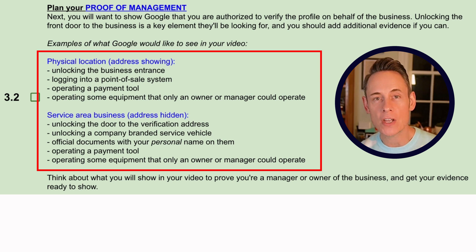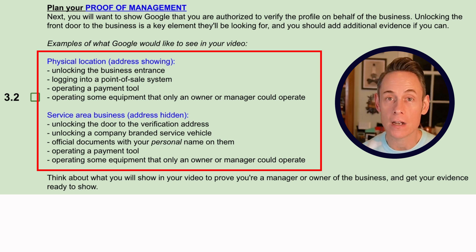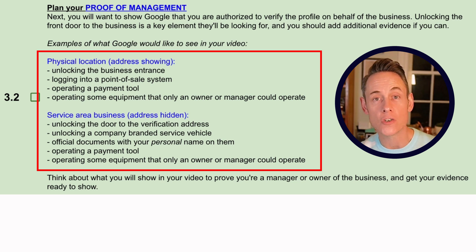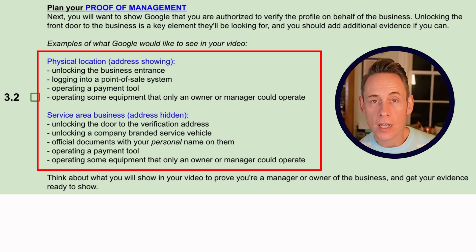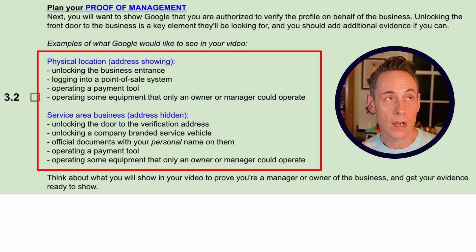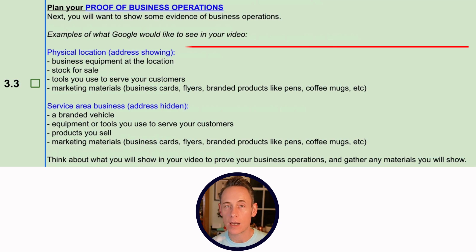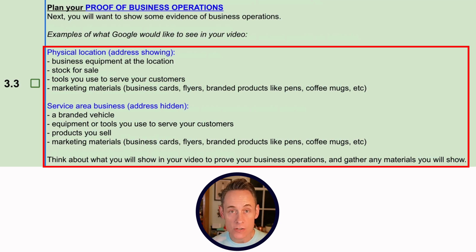Next, plan your proof of management. You want to prove you're authorized to represent this business — by unlocking the door to the business, unlocking a branded service vehicle if you're a service area business, or operating a point-of-sale or payment processing system. After that, prove your business is in operation: show tools you use, stock or products, business vehicles, or marketing materials. This demonstrates it's a real business that's actively operating.